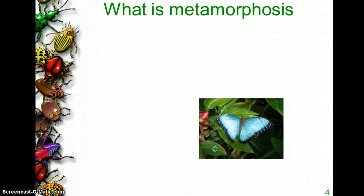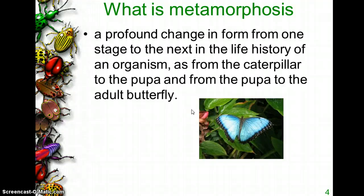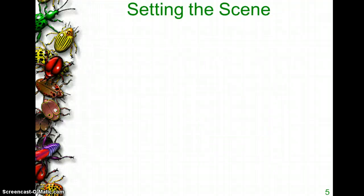So what is metamorphosis? You may recognize this term from biology. The definition is a profound change in form from one stage to the next in the life history of an organism — like when a caterpillar goes into a cocoon and comes out as a beautiful butterfly. That's metamorphosis. Well, the story is called Metamorphosis because you're going to find that the main character actually turns into an insect.